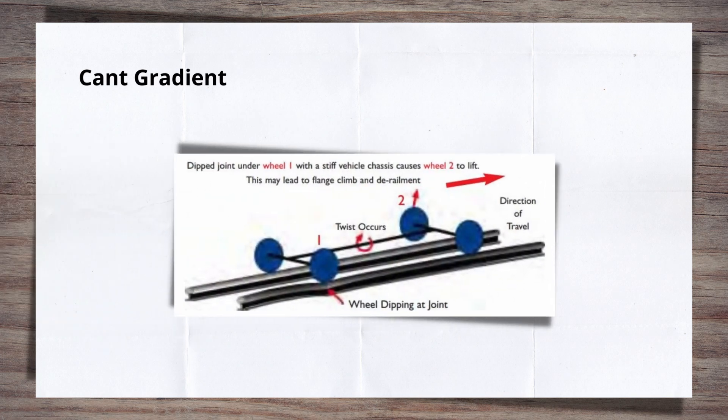One area that shows the risk associated with sharp cant gradients are twist faults. A twist fault is created when, due to issues with the track, one rail drops suddenly, creating an increase in cant.